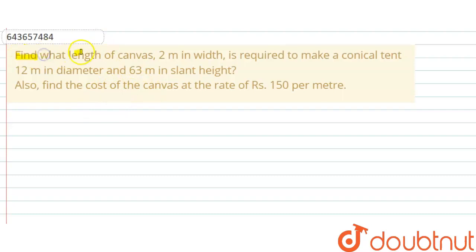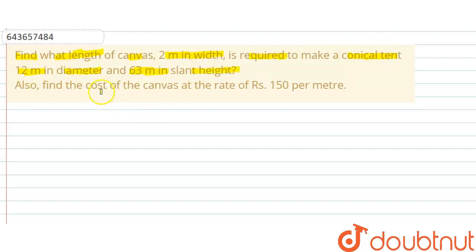Find what length of canvas 2 meters in width is required to make a conical tent 12 meters in diameter and 63 meters in slant height. We also have to find the cost of canvas at the rate of rupees 150 per meter.